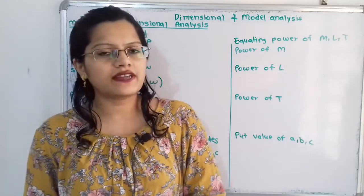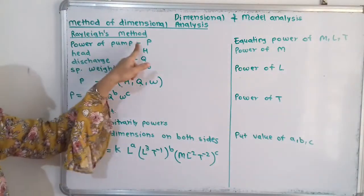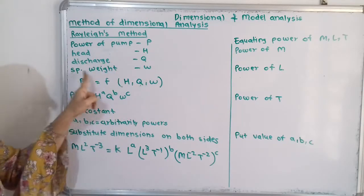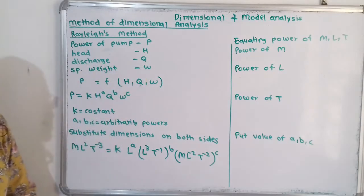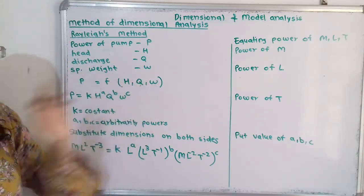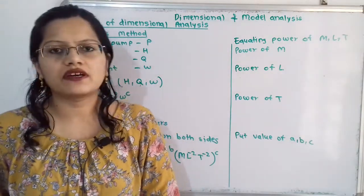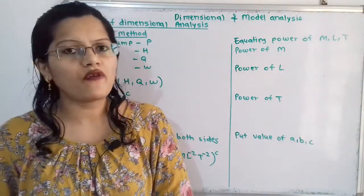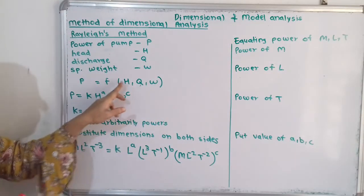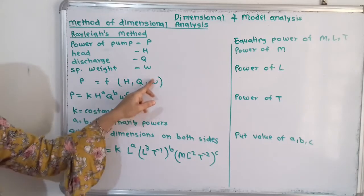Now we will understand what is the given data. It is given that power of pump P depends upon head H, discharge Q, and specific weight W. So we can write P as a function of H, Q, and W. Using Rayleigh's method, we write P = K · H^A · Q^B · W^C.